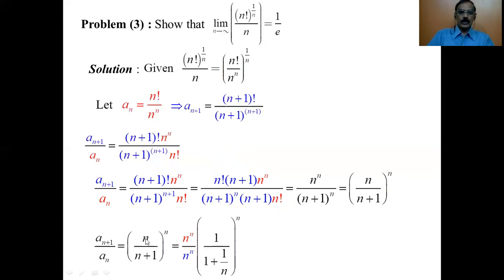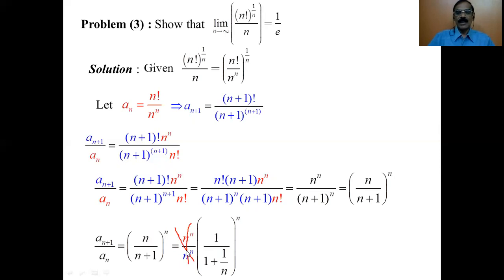To introduce 1/n as a factor, take n out from the numerator and n out from the denominator. Since the power is n, taking n out of the numerator gives n to the power n, leaving 1 inside; similarly in the denominator, taking n out gives n to the power n, and we are left with 1 plus 1/n inside. The n to the power n in numerator and denominator cancel, and we are left with only numerals and the factor 1/n — which is our aim.